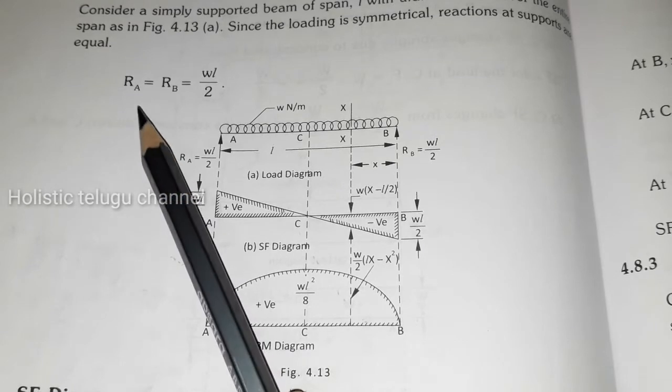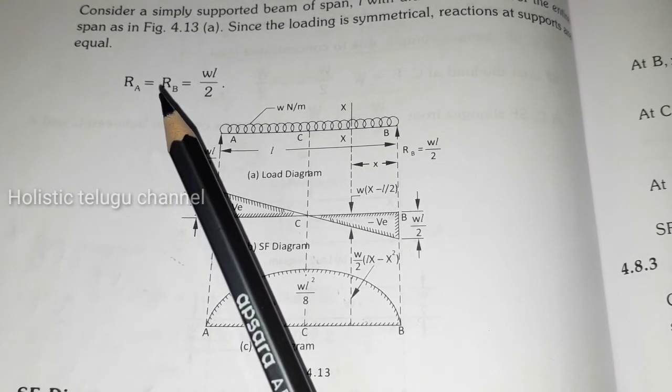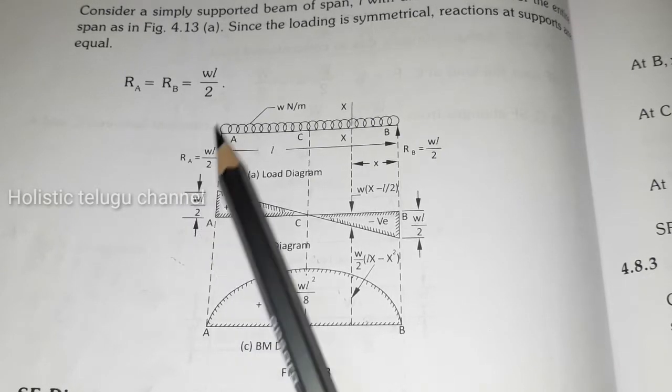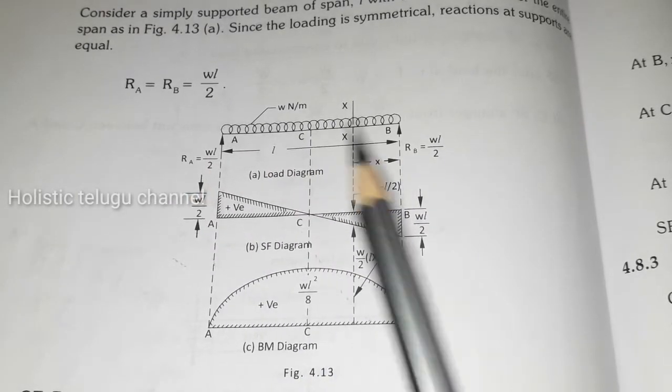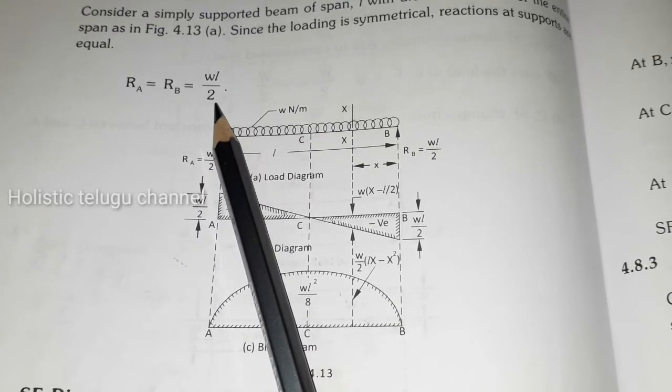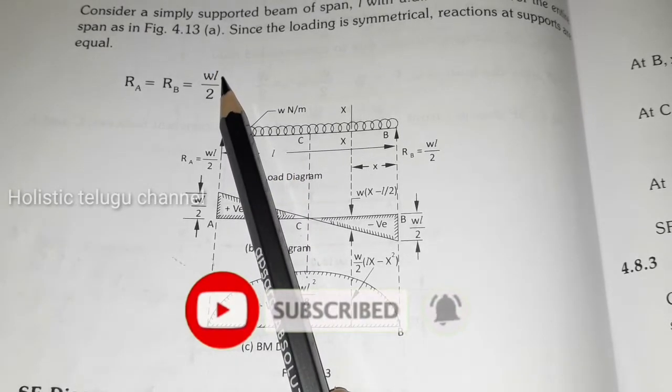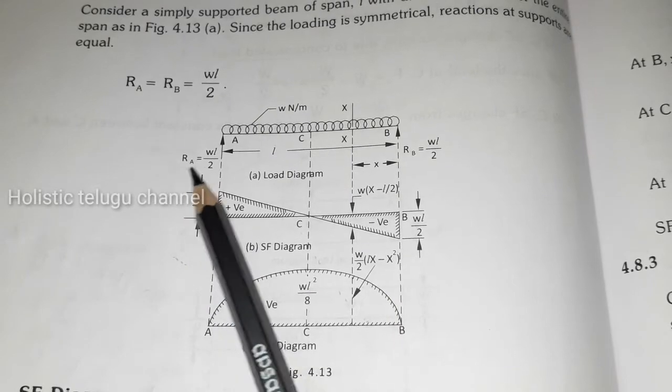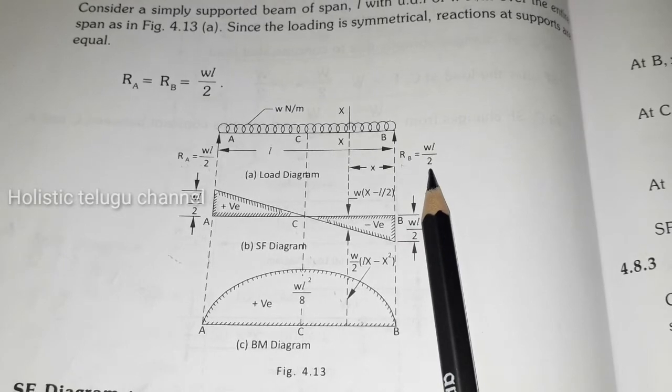So here we have the reaction forces. Here we have the load and the symmetrical reaction forces. We also have the supports here and the reaction forces. So R_A equal to R_B equal to WL by 2. So here we have the UDL, next we have the reaction forces R_A WL by 2, here R_B WL by 2.